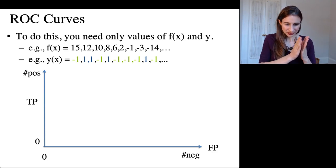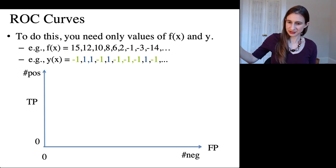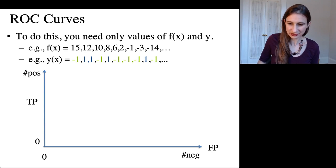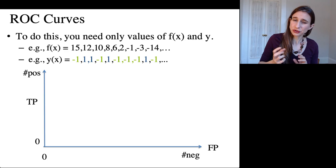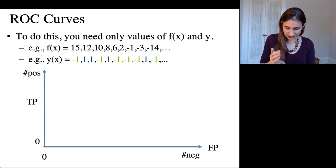So those are my function values and then those are the y values. And now I'm going to slide this decision boundary along the function values. And so again, compute true positive and false positive, but instead of doing rates, I'm just going to do counts.